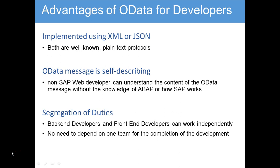Coming to the first one: the OData interface is implemented using XML or JSON. In the current scenario, you will find more XML and JSON developers than ABAP developers. So this is a very easy to implement technology, and that is one advantage which OData gives. Both XML and JSON formats are well-known plain text protocols for the transmission of information over the web.